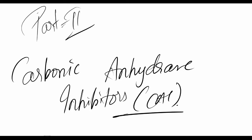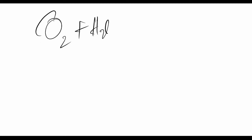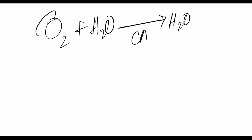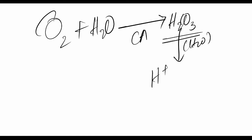The reaction proceeds as follows: carbon dioxide and water are catalyzed by carbonic anhydrase, which converts them into H2CO3 — that is carbonic acid. This, in the presence of water, gets converted to a hydrogen ion (H+) plus HCO3 minus, that is a bicarbonate ion.